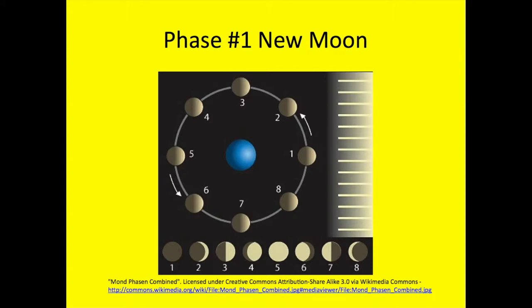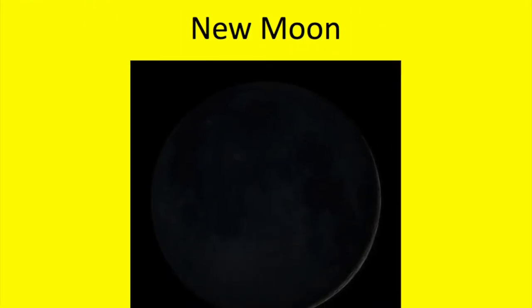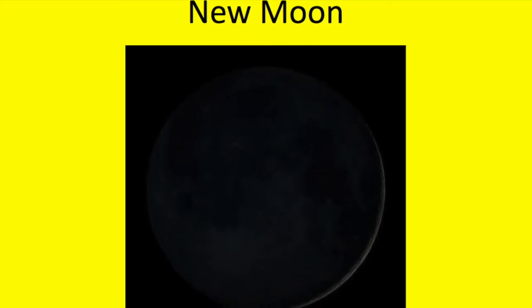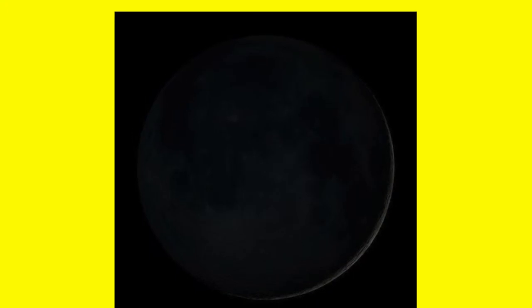In phase 1, the new moon, the moon is between the earth and the sun. We actually see no moon because the sun is not lighting up the moon at all.